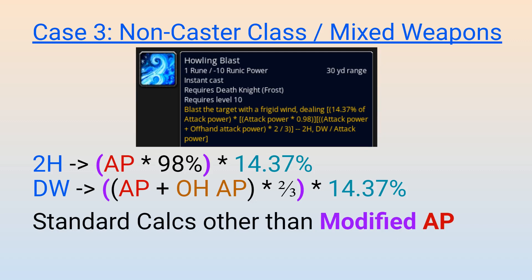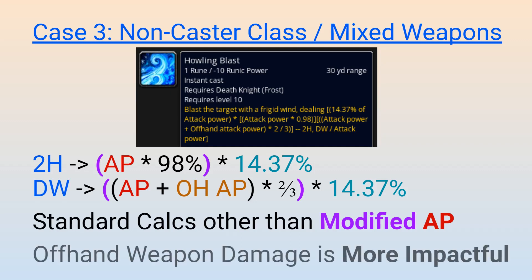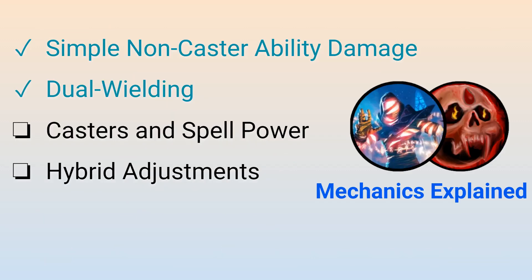Furthermore, the main implication of these calculations is that off-hand weapon damage is more impactful on these specializations that can choose their weapon types than it is on pure dual wielding specializations. In any case, this should cover most of the situations you will run into with non-caster specializations.